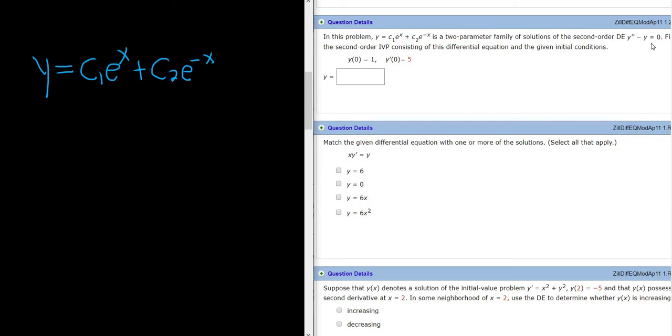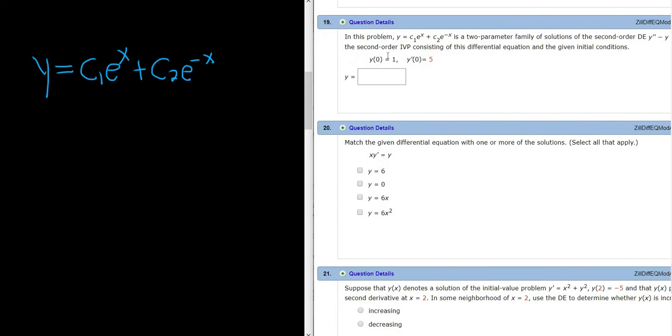And they tell us that this is a two-parameter family of solutions to this differential equation. So basically, if you were to solve this differential equation, you would get this answer. Then it tells us to find a solution of the second-order initial value problem consisting of this differential equation together with these two conditions, which is called an initial value problem.